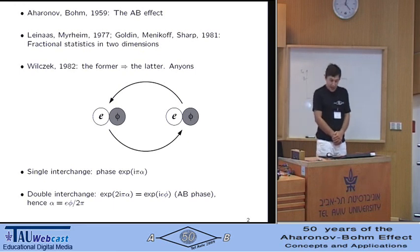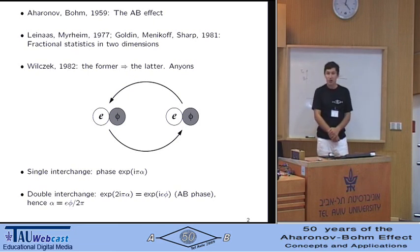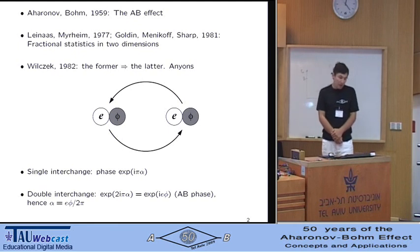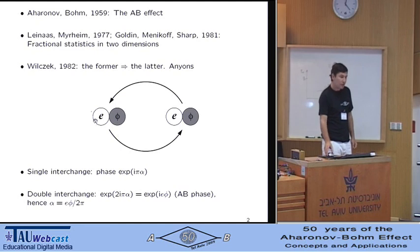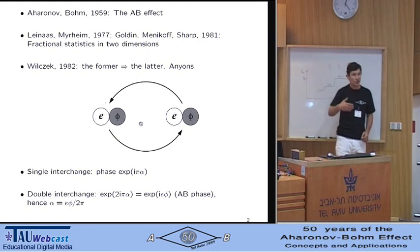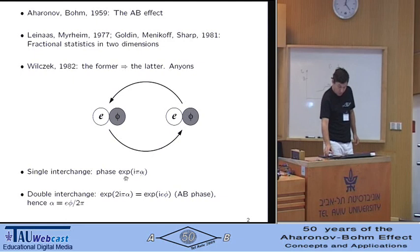The next important step was taken in 1982 by Wilczek, who connected the two concepts, showing that the former, in fact, implies the latter. The argument goes like this. If there is a composite particle consisting of a charge E and a flux phi, then an interchange of two such particles can only yield a phase because it doesn't change the quantum mechanical state.